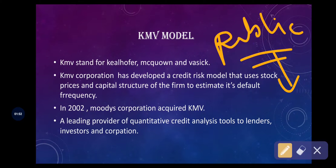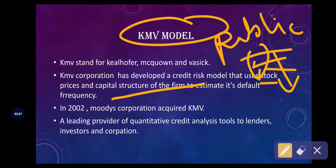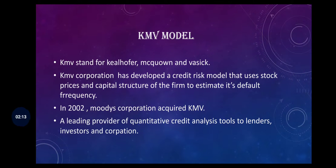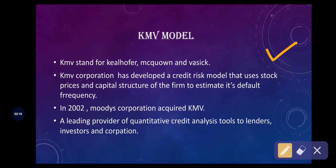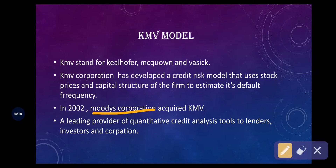KMV uses the stock price and the capital structure of the firm to estimate its default frequency. For measuring credit risk, they use the stock price and the capital structure of the specific firm. We will discuss later what this default frequency means.